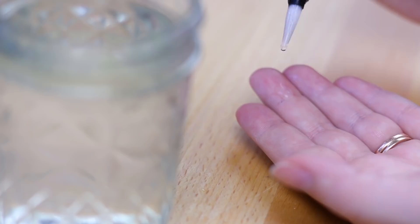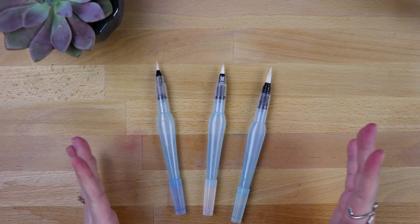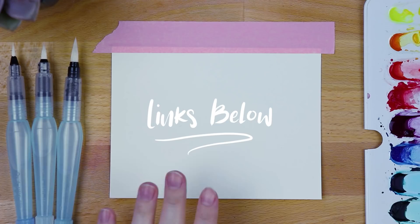All three are now filled up with water and we're ready to go. Let me show you how these work with watercolor paints. I have some Canson watercolor paper 140 pounds right here, just cut up and taped to my desk, and my water brushes and my Sennelier watercolors.